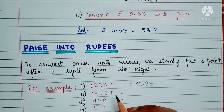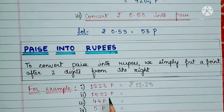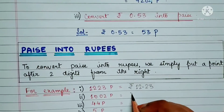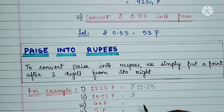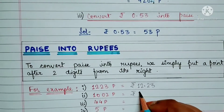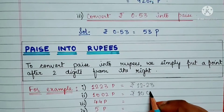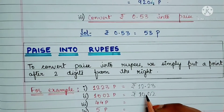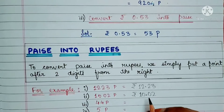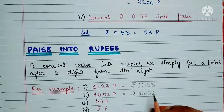Now let's move on to the second example. It is 1002 paise. For conversion, we will write the symbol of rupees, then write the number as it is, and put a dot just after 2 digits from the right side.